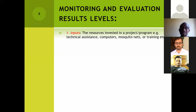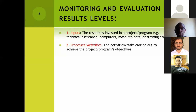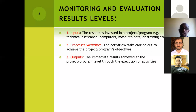Results in M&E will always be defined based on these levels. When you talk about inputs, we are talking about what resources have been invested in the project or program — for example, technical assistance, computers, mosquito nets to be distributed, or training to be done. When you look at the processes or activities, these are basically the activities that we are going to carry out to make sure that the project or program can achieve its objectives as expected.